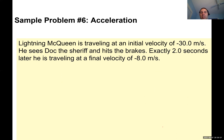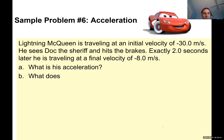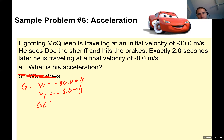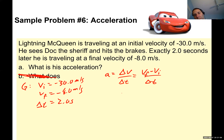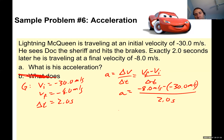One more problem: Lightning McQueen is traveling at negative 30.0 meters per second, hits the brakes, and 2.5 seconds later is at negative 8.0 meters per second. Acceleration equals final minus initial over time: negative 8.0 minus negative 30.0 equals positive 22.0 meters per second, divided by 2.0 seconds, giving positive 11.0 meters per second squared. Be careful with your signs — negative minus a negative becomes a plus.